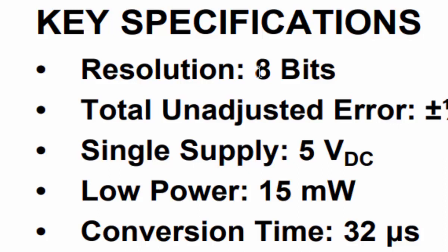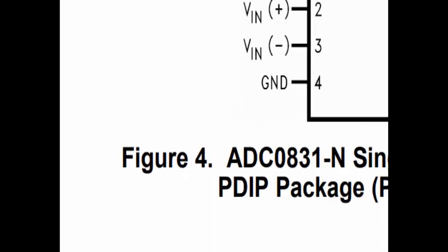This ADC uses a single supply, so you don't have to provide a split supply — you can use the same 5V DC you provide to your microcontroller. It consumes only 15 milliwatts of power. The second most important parameter of any ADC is the conversion time: this ADC takes 32 microseconds to perform a single conversion. These three parameters — supply voltage, bit resolution, and conversion time — are what you need to understand when choosing any ADC.